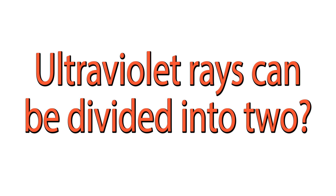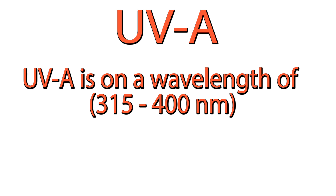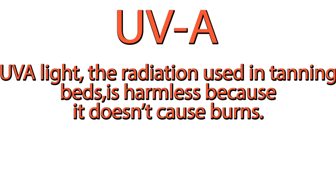Ultraviolet rays can be divided into two types. UVA is on a wavelength of 315 to 400 nanometers. UVA light is the radiation used in tanning beds.